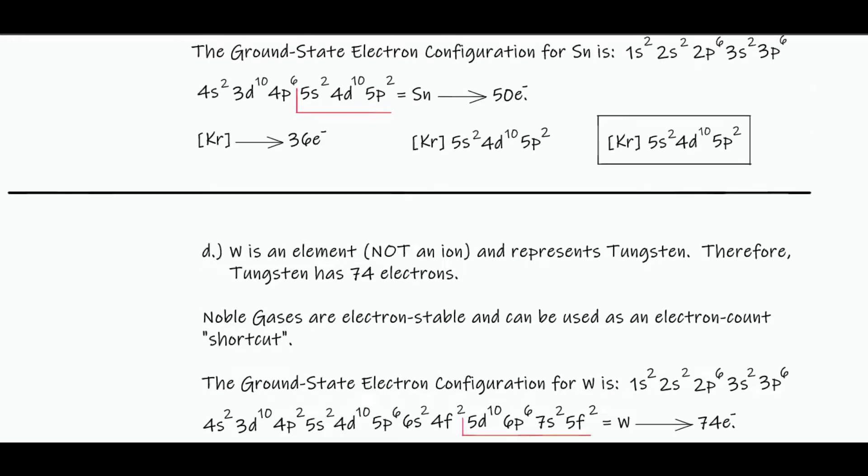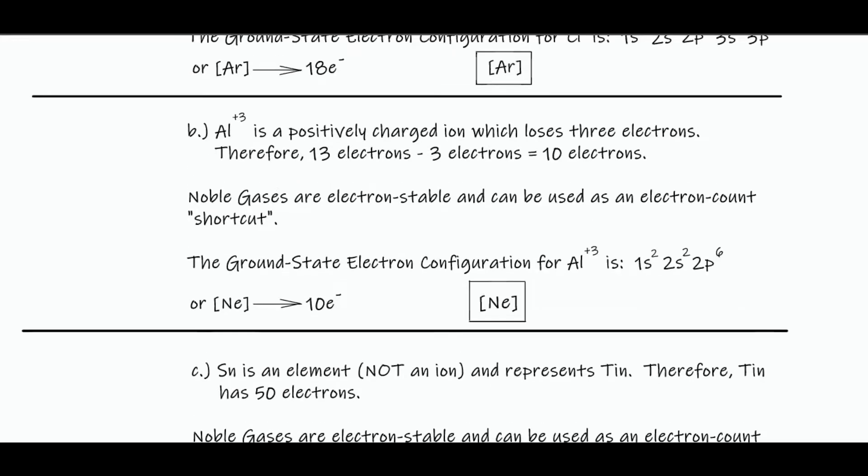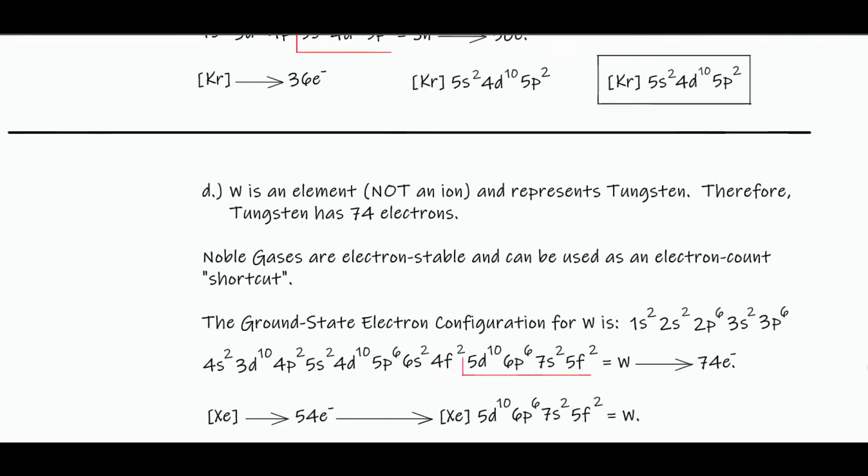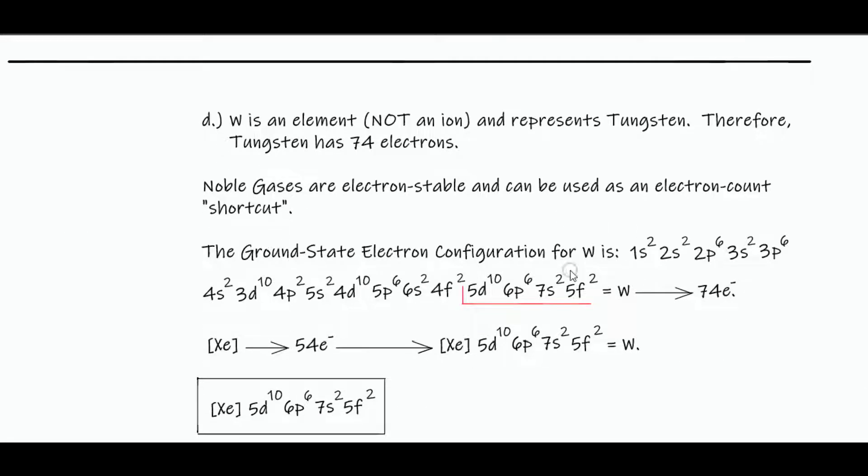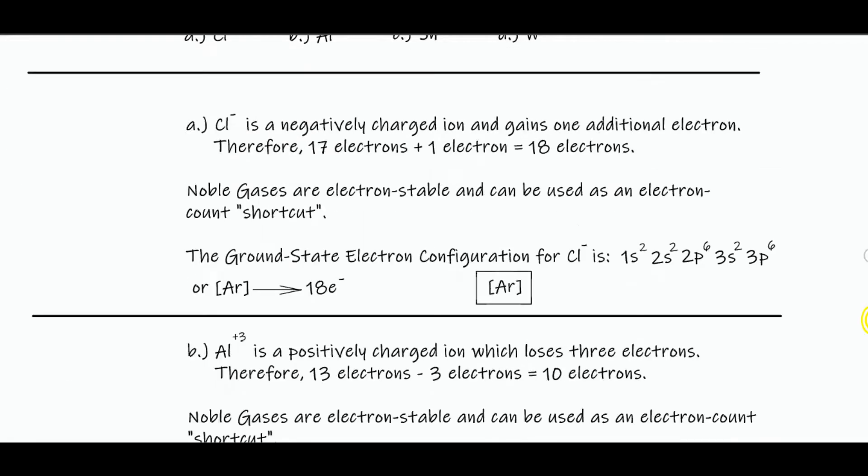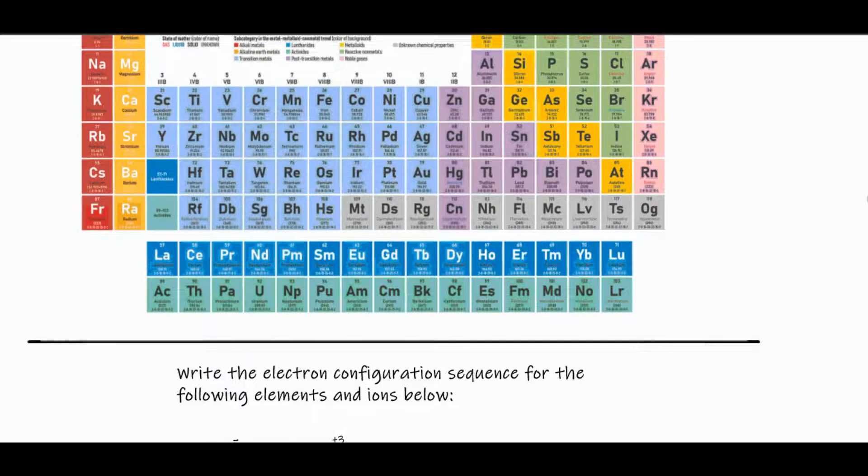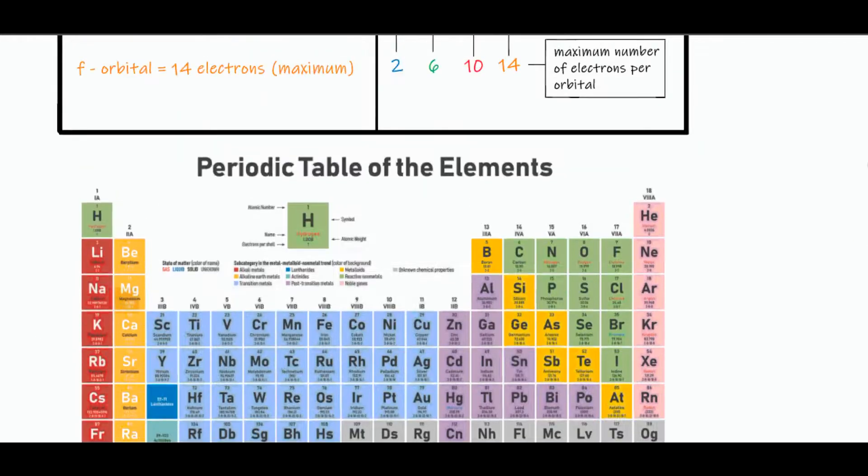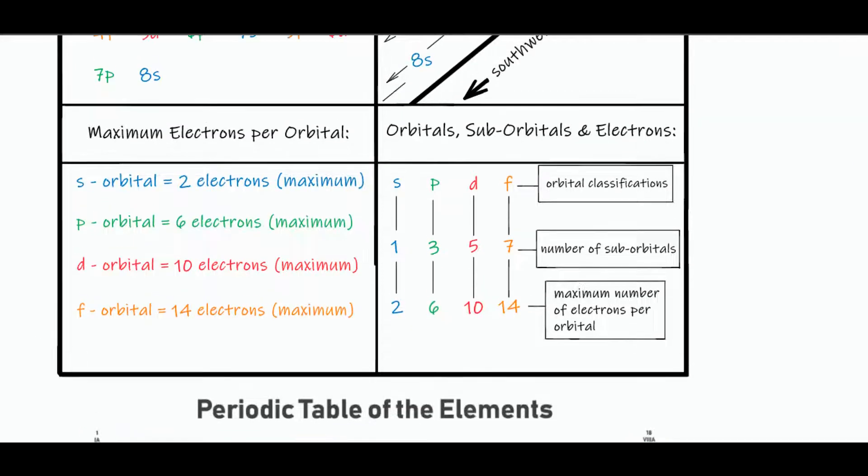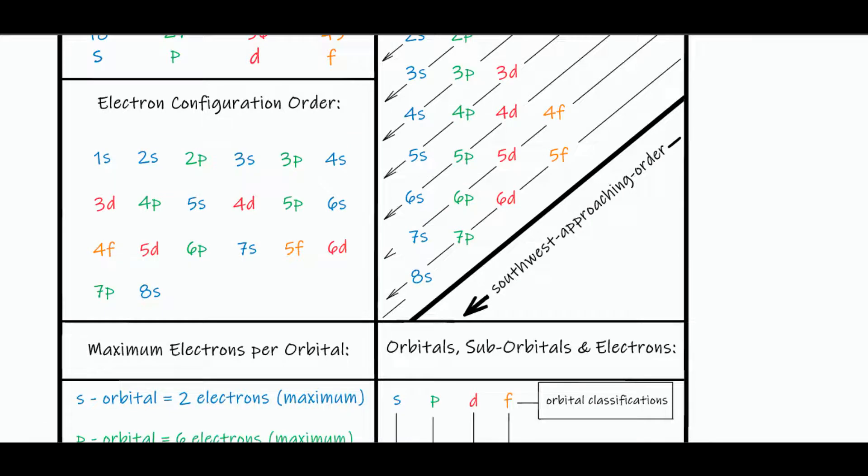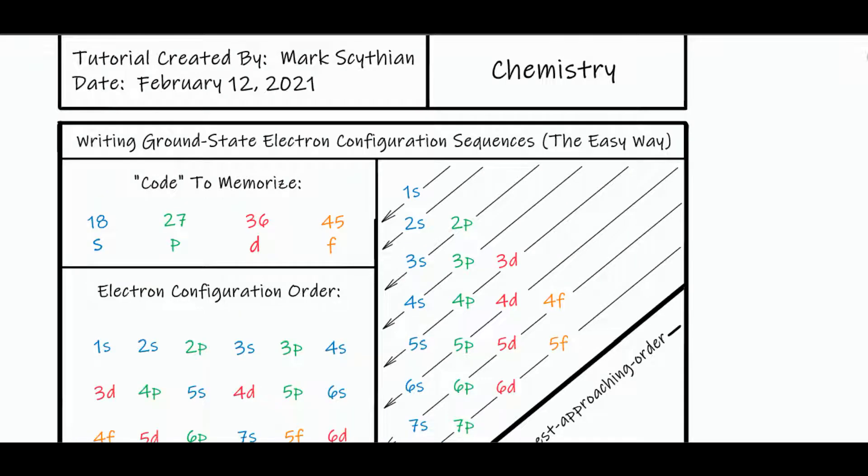And you should see that on your multiple choice selection, or you may see the whole sequence written. I doubt they'll do that. They'll usually truncate with a noble gas shortcut. So solve for the noble gas, and then add the rest in. And then you'll easily master writing ground state electron configuration sequences.